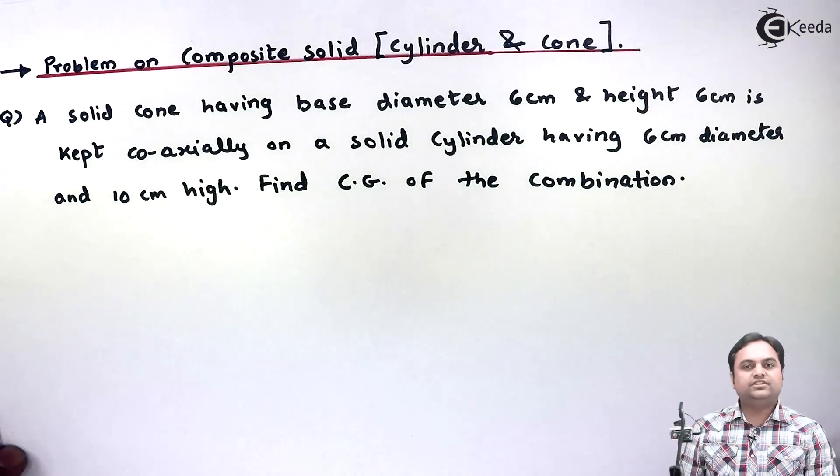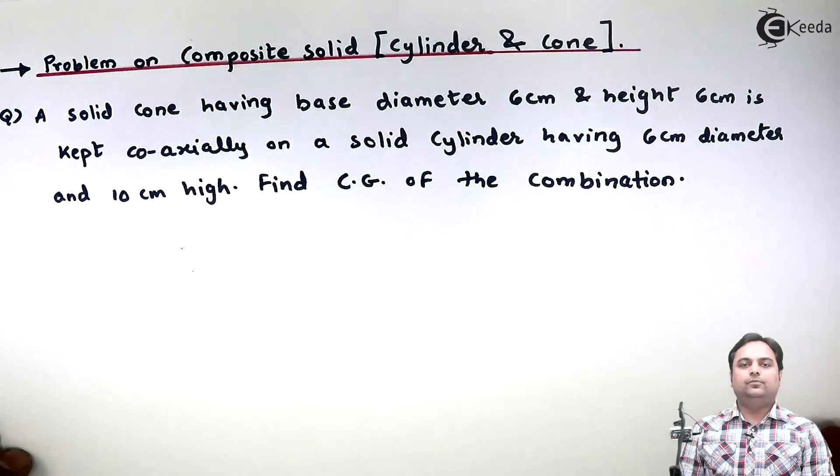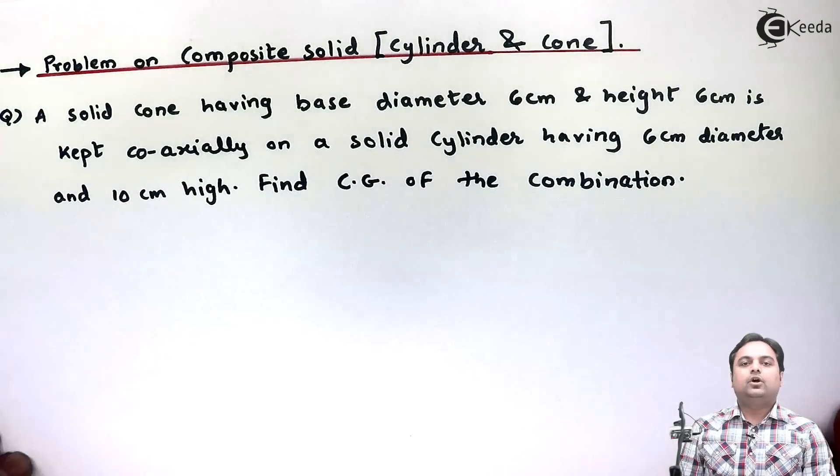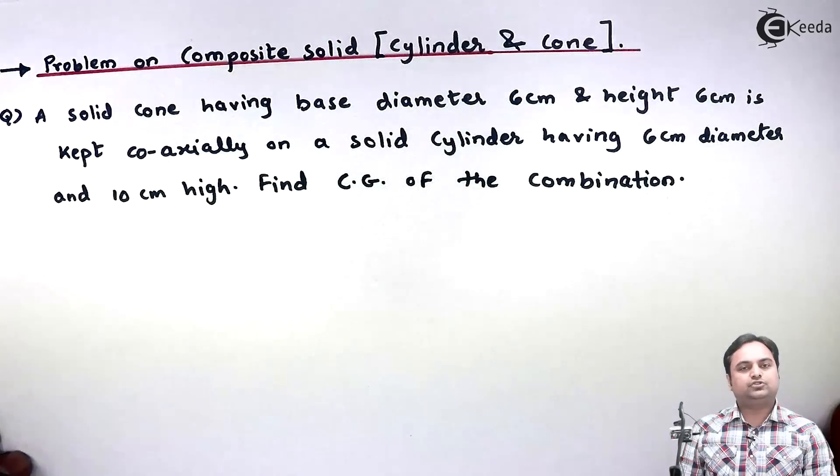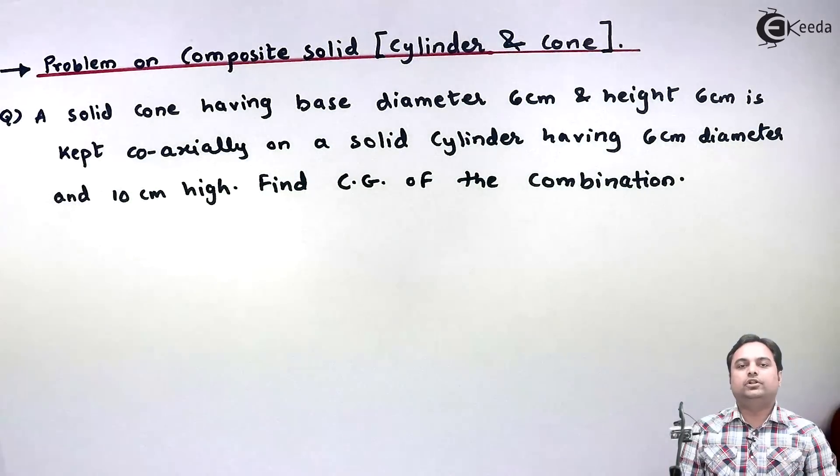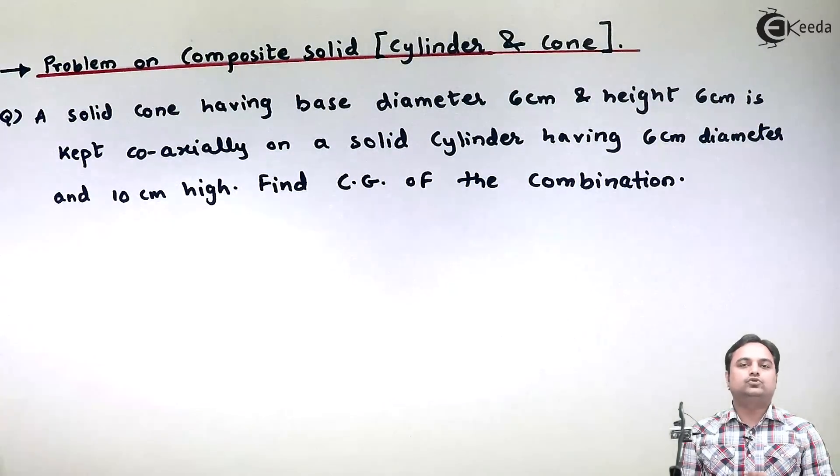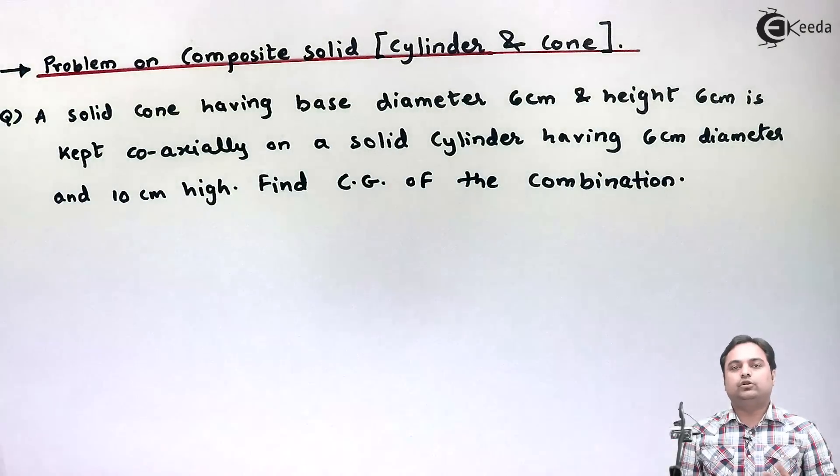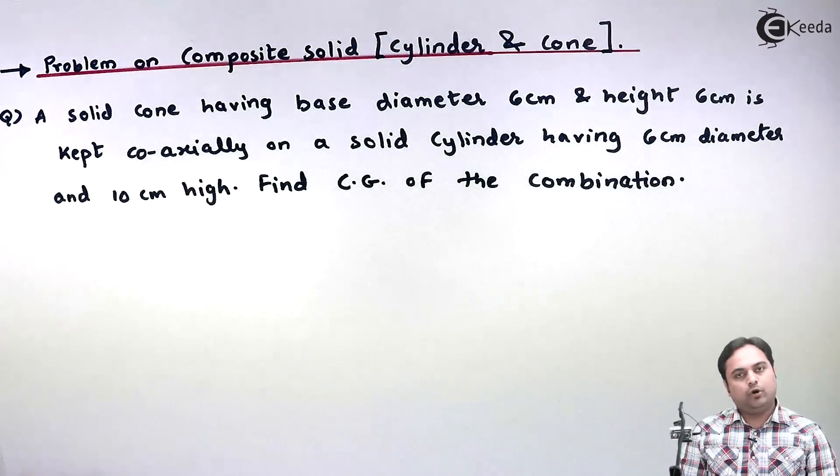Hello friends, in this video we will see the problem on composite solid. Composite solids are that solids in which we have a combination of more than one solid. If you combine two solids or more than two solids, that becomes a case of composite solid.